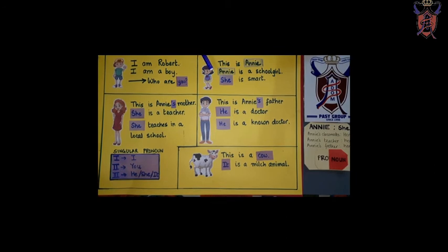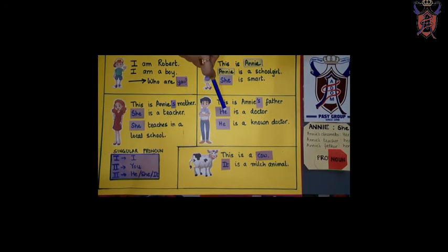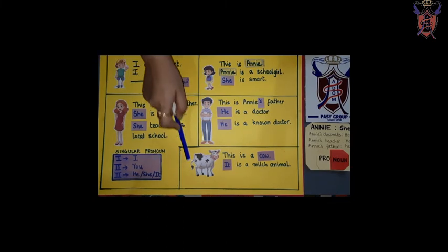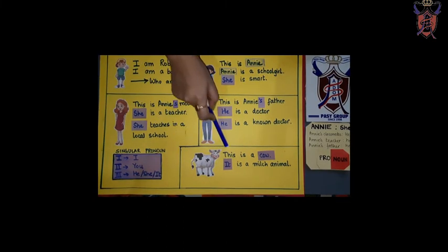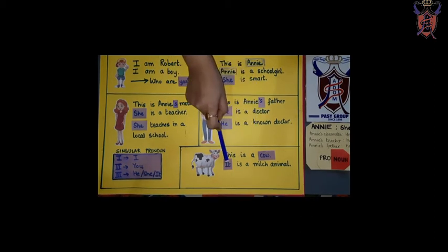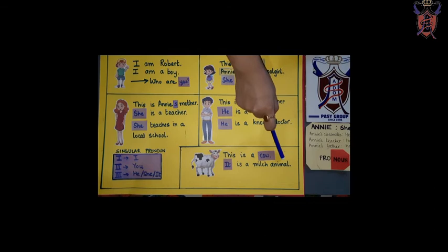Yarni, pronouns mein, agar lardka hooga, to he use karenge. Lardki hooghi, to she use karenge. But yahaan korn hai? This is a cow. Ab cow ke lihe kya use karenge? This is a cow. It is a milch animal.